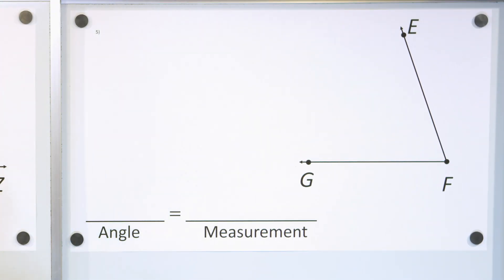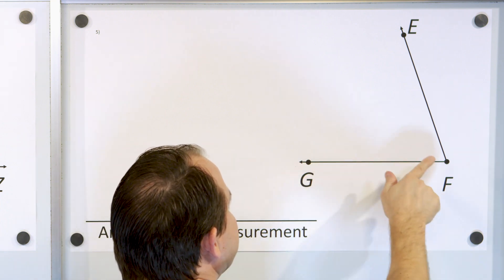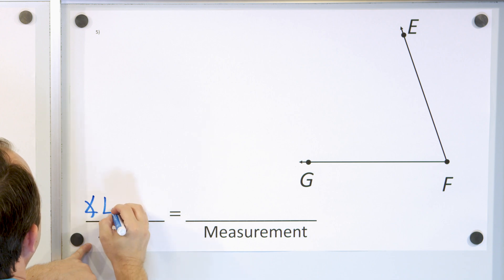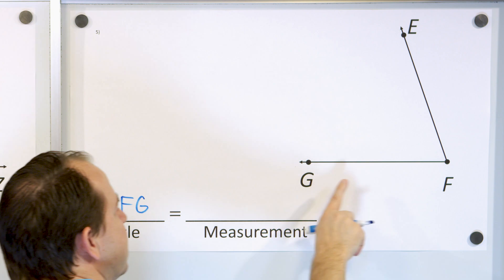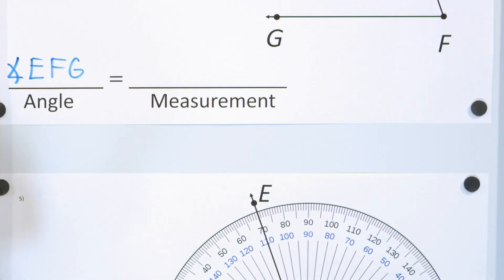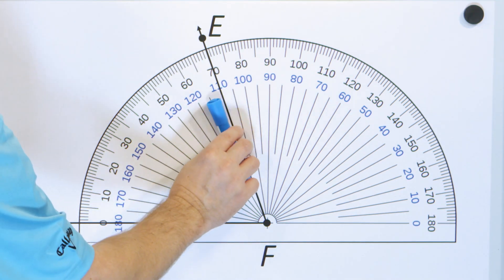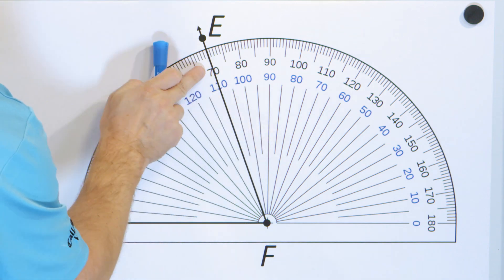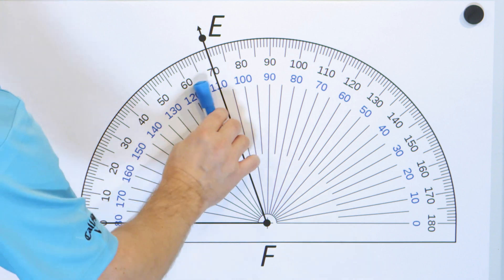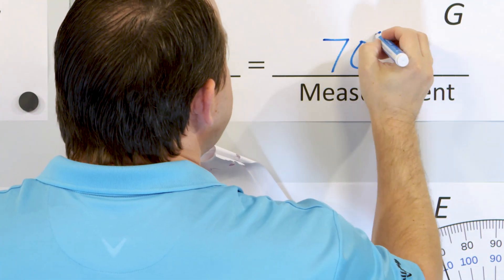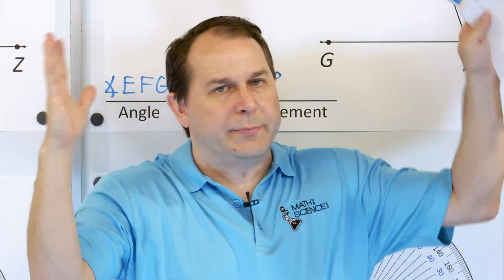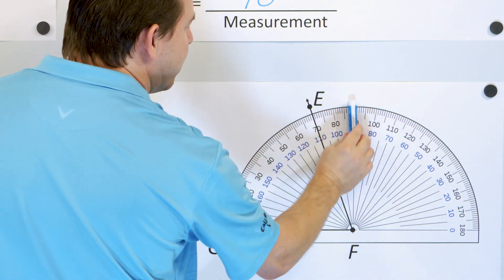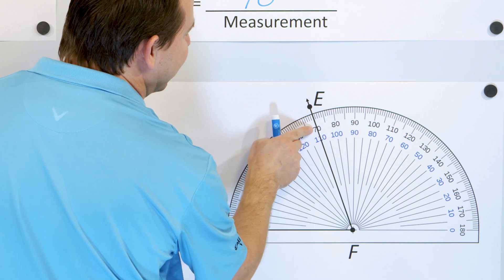Let's take a look at problem five. We have F in the middle, so we're going to call this angle EFG — F has to be in the middle because that's at the vertex. What is that angle measure? Here we have a protractor; this is the horizontal. We want to measure the angle between these two rays. We know that 90 degrees is straight up, so this angle measure must be smaller because it's more closed. We read the two numbers: is it 70 or 110? It has to be less than 90, so the answer is 70 degrees.